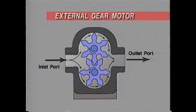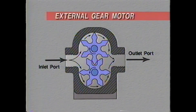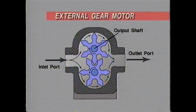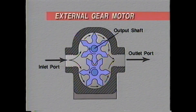Internal and external gear motors function in the same way as internal and external pumps. On an external gear motor, both gears are driven, but one is connected to an output shaft. Oil is forced into the chamber and flows between the casing and gears, forcing the gears and output shaft to turn.